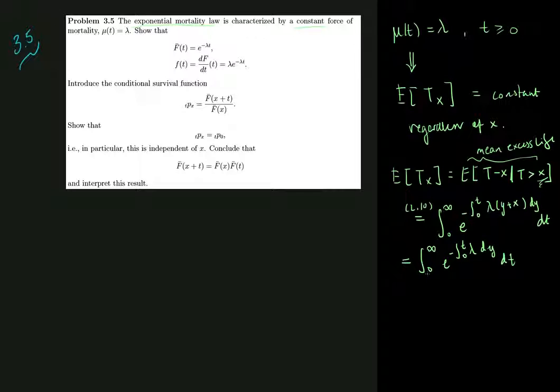This just means that the remaining lifetime of an x-year-old is the same, regardless of whether you're 0, 5 years old, or 110 years old.